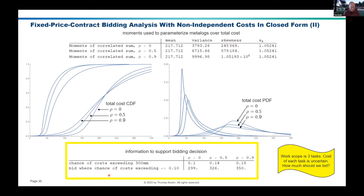The other way around: if management says, tell me what we'd have to bid so that the chance of total cost exceeding that bid is less than or equal to 10% — if they're independent, the answer is around 299 million. But if those costs are correlated, you'd need to up your bid to about 326 million. And if they're strongly correlated, maybe 350 million is a better number.